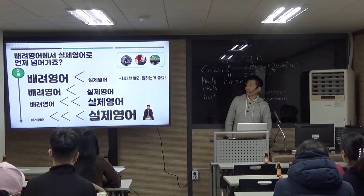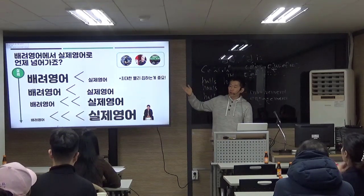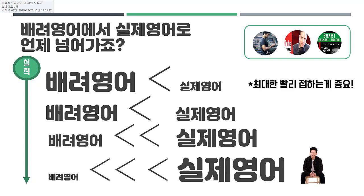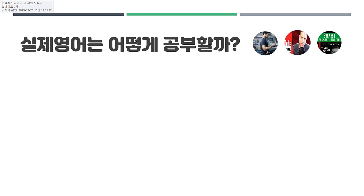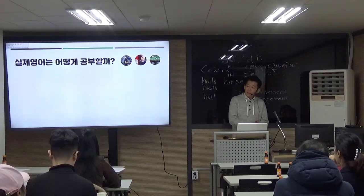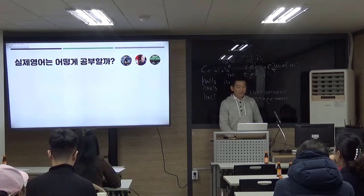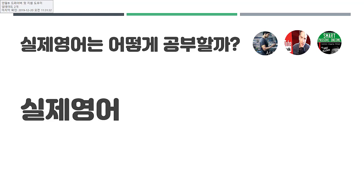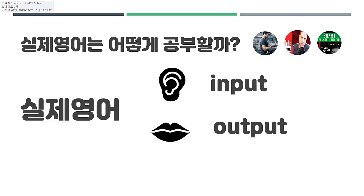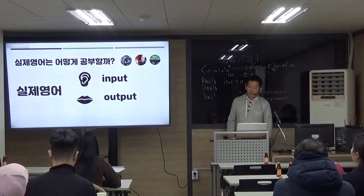배려용어 같은 경우는 짧고 굵게 하고, 실제형은 빨리 접하는 게 좋다는 것을 말씀드리겠습니다. 그러면 이제 배려용어는 끝났어요. 실제형은 그럼 어떻게 공부해야 될까? 일단 실제형을 두 가지로 분리해볼게요. 첫 번째는 인풋이에요. 두 번째는 아웃풋이에요.